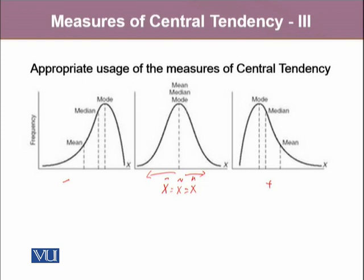But we do know that there is one property of arithmetic mean: mean tends to move towards the extreme values, and those extreme values could be in positives or they could be in negatives.